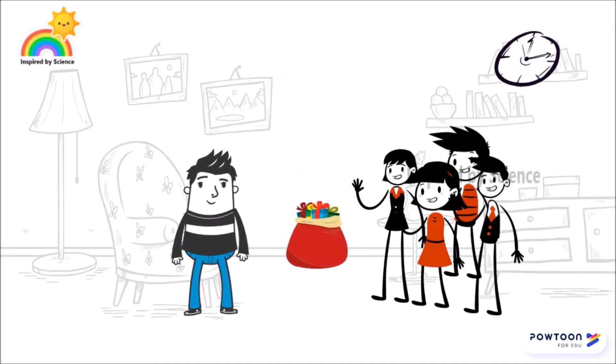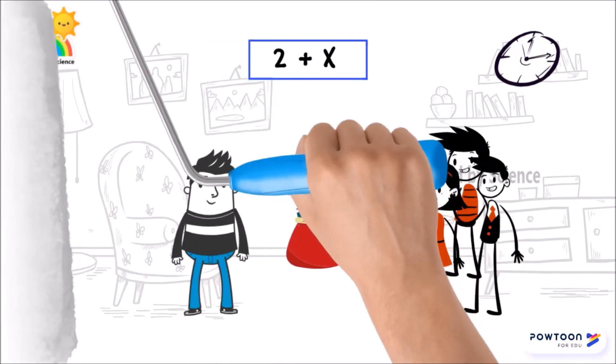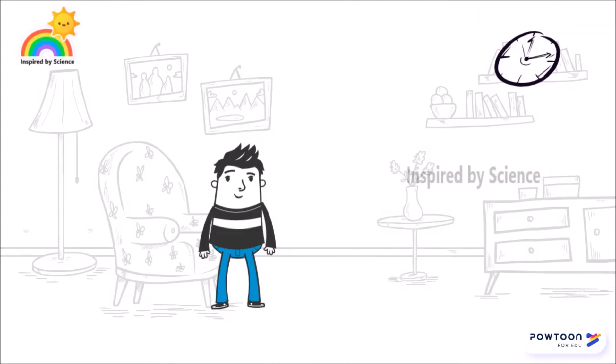Since we don't know the number of gifts in the bag, let's mark it x. So now Chris has 2 plus x number of gifts. At the end of the day, when he counted the total number of gifts he had received, it was equal to 5.